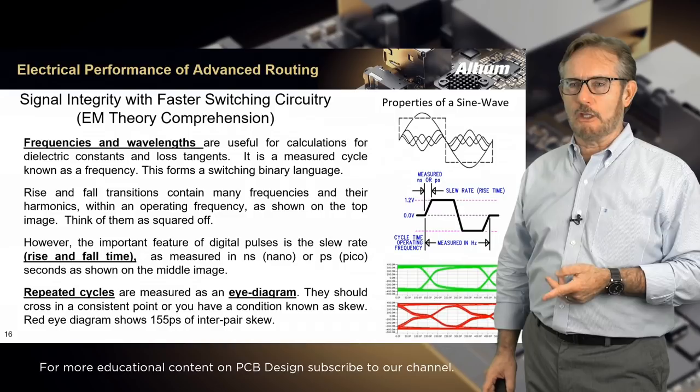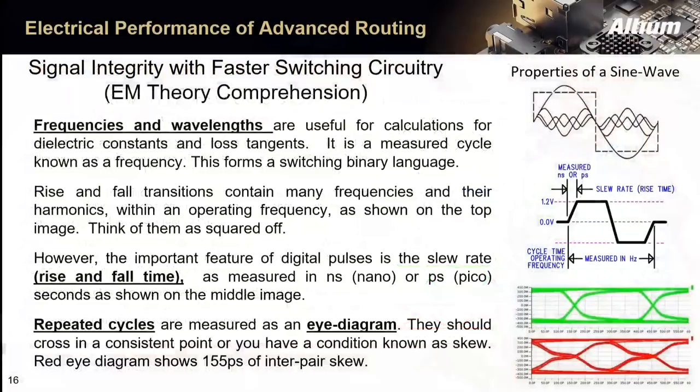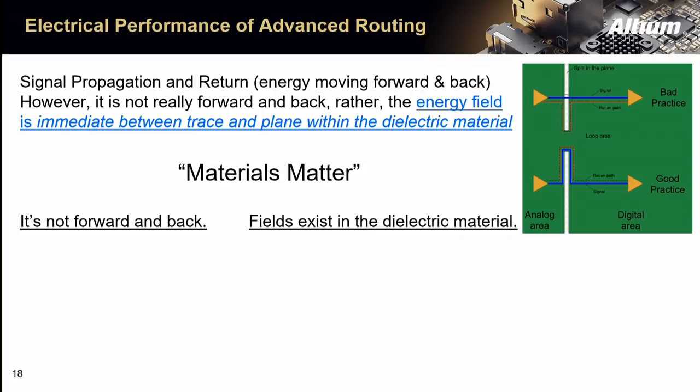We're not just charting one cycle — we're looking at an eye diagram showing differential pairs switching in the gigahertz, which is billions per second. The eye diagram shows if the circuit is performing truly over all those repeated cycles. When it doesn't perform, the rising and falling edges don't meet in the middle, you get skew between the two, and that causes your high-speed circuit not to work.